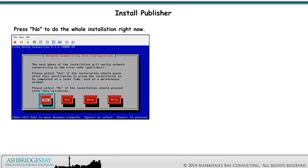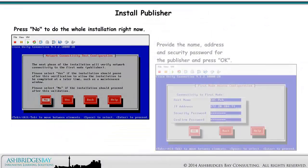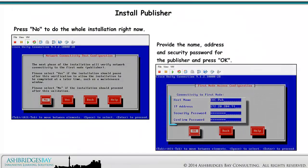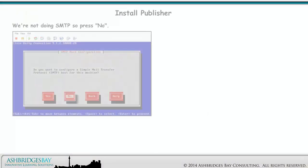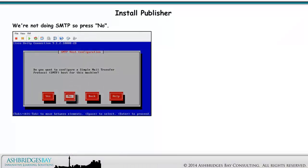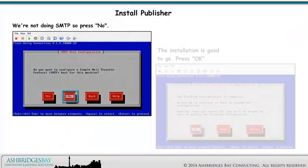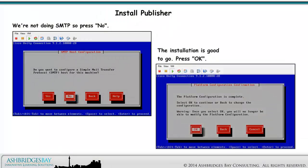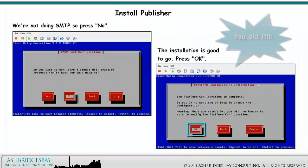Press No to do the whole installation right now. Provide the name, address, and security password for the publisher and press OK. We're not doing SMTP, so press No. The installation is good to go — press OK.